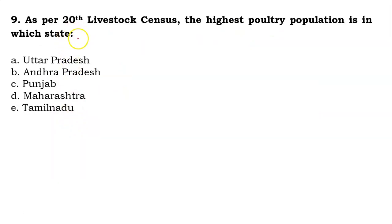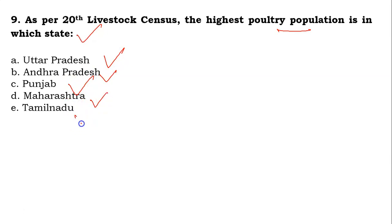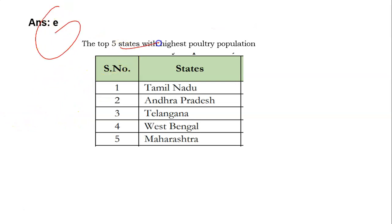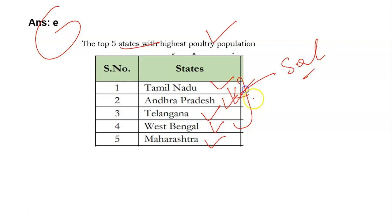The ninth question: as per the 20th Livestock Census, the highest poultry population is found in which state? Options are UP, Andhra Pradesh, Punjab, Maharashtra, or Tamil Nadu. The answer is E. The top five states with the highest poultry populations are Tamil Nadu, Andhra Pradesh, Telangana, West Bengal, and Maharashtra. States from the southern region are in the top three.